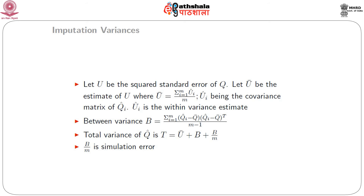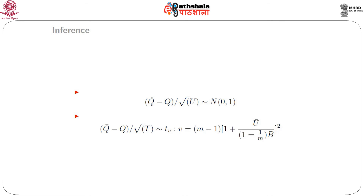Let T denote the total variance of Q-bar. T comes out to be u-bar + b + b/m, where b/m is the simulation error, which can be written as u-bar + (1 + 1/m)b. The intuition is: u-bar is the variance in Q-bar caused by using a sample; b is the variance caused by missing values; and b/m is the simulation variance from Q-bar being based on a finite m. The larger m is, the smaller b/m becomes, so T tends to u-bar + b with sufficiently large m.